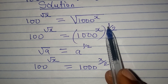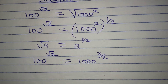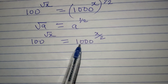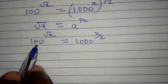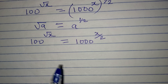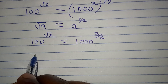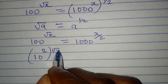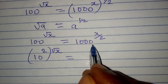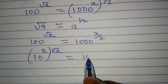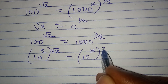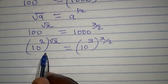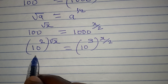Because we have X times 1 over 2, which gives us X over 2. Now from here we want to try to have the same base. 100 is the same thing as 10 times 10, which is 10 squared — in brackets root X — and then 1000 is the same thing as 10 to the power of 3, in brackets X over 2.